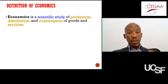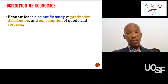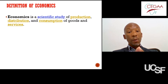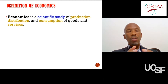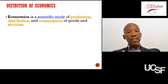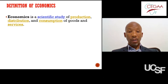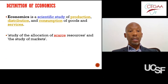What, how, and for whom — that means: what goods and services does the government need to produce, how does the government decide to distribute these goods and services, and for whom are these goods and services distributed? In everyday life, our government is trying to answer these three broader questions of economics.